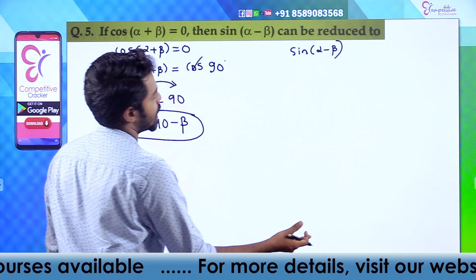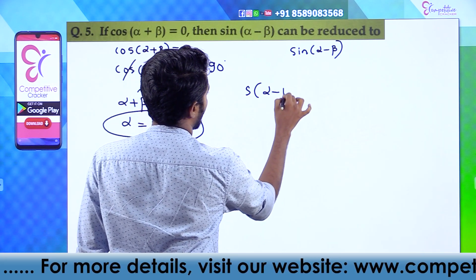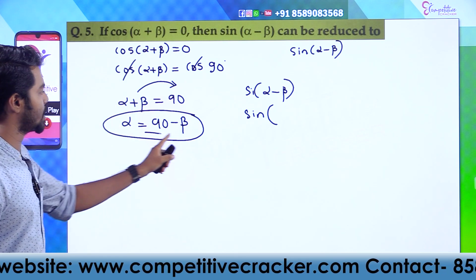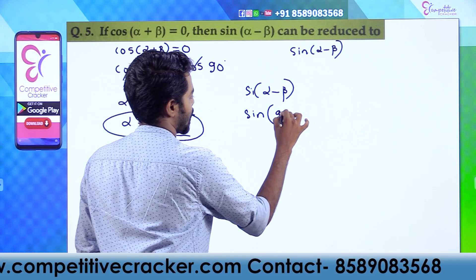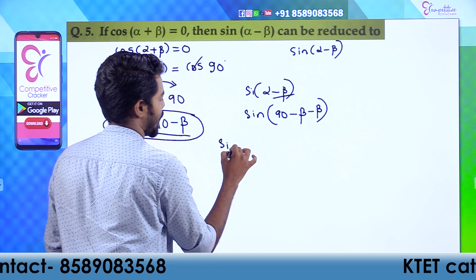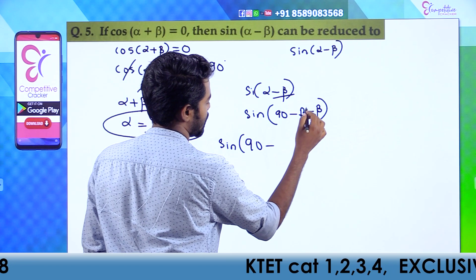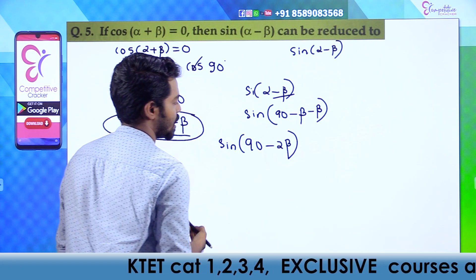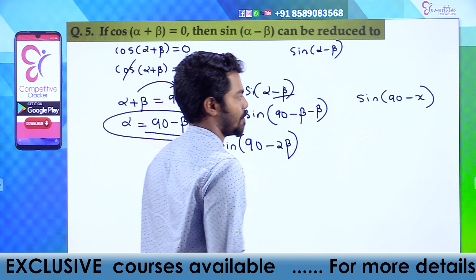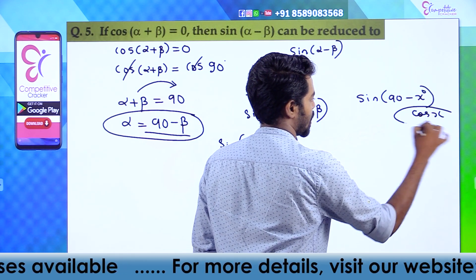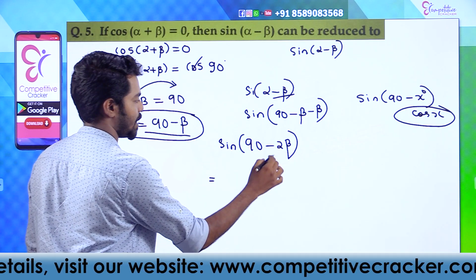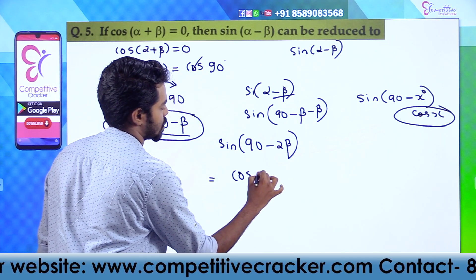Here we have to find sin(α - β). Since α = 90 - β, we substitute: sin((90 - β) - β) = sin(90 - 2β). Using the identity sin(90 - x) = cos x, sin(90 - 2β) equals cos 2β. So the answer is cos 2β.